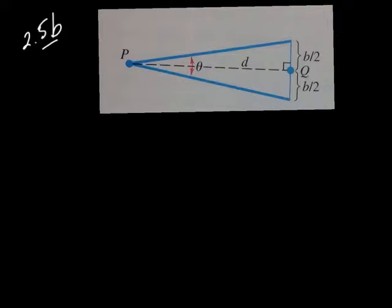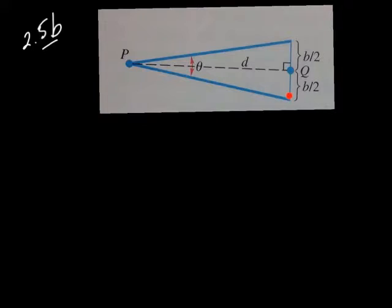Example 3 describes a method that surveyors use to determine a small distance between p and q, called d. This is called the subtense bar method. If they find out what this angle is and the length of this line, they can find this distance here.